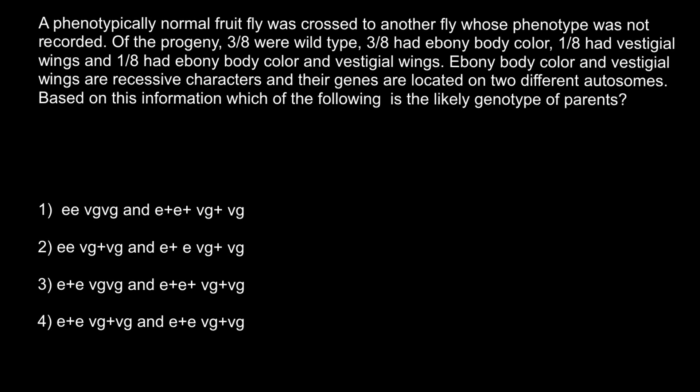A phenotypically normal fruit fly was crossed to another fly whose phenotype was not recorded. Of the progeny, 3/8 were wild type, 3/8 had ebony body color, 1/8 had vestigial wings, and 1/8 had ebony body color and vestigial wings. Ebony body color and vestigial wings are recessive characteristics and the genes are located on two different autosomes. Based on this information, which of the following is a likely genotype of the parents?